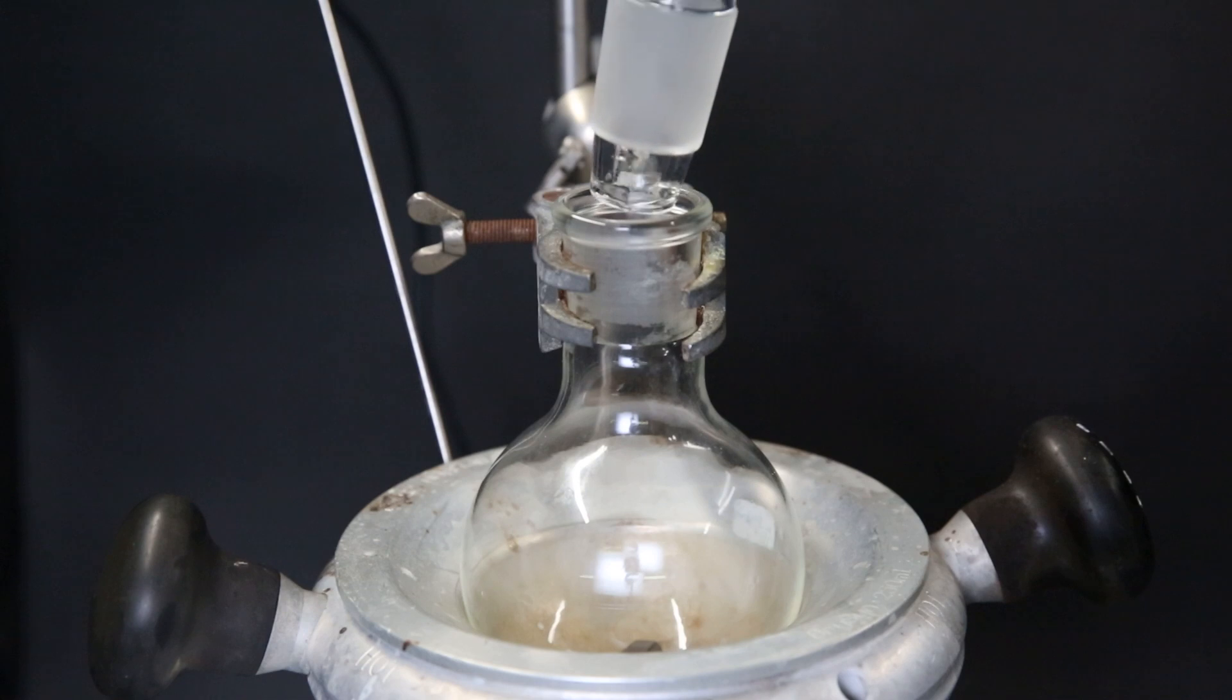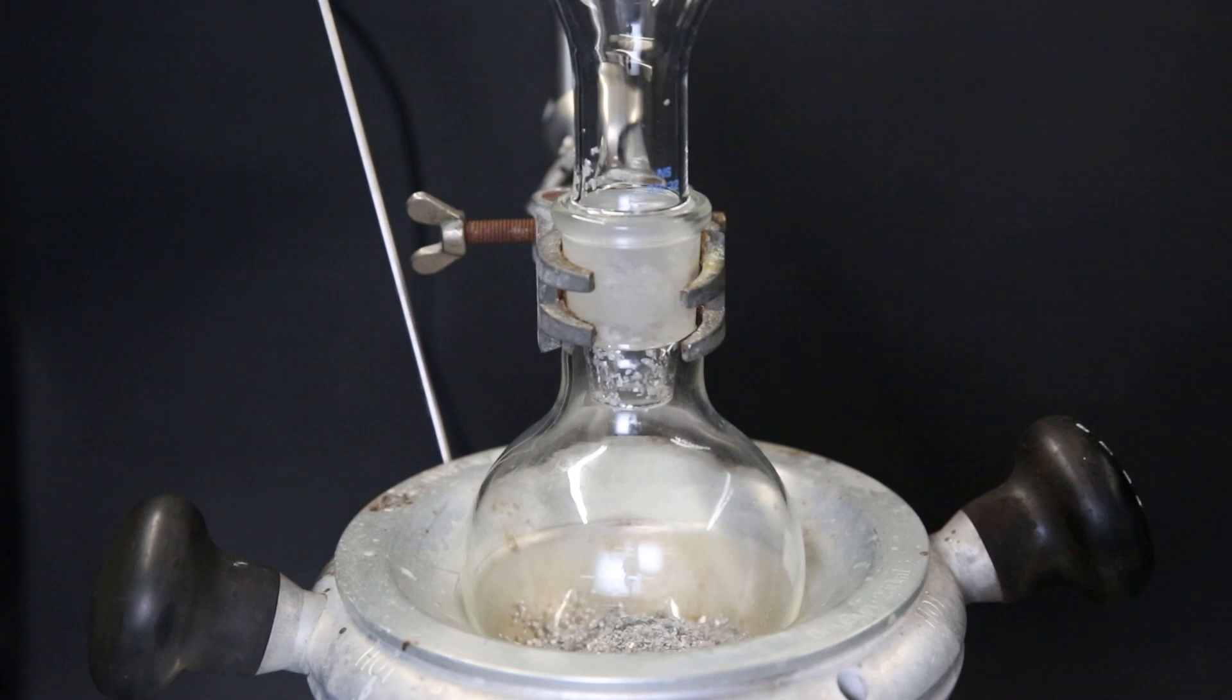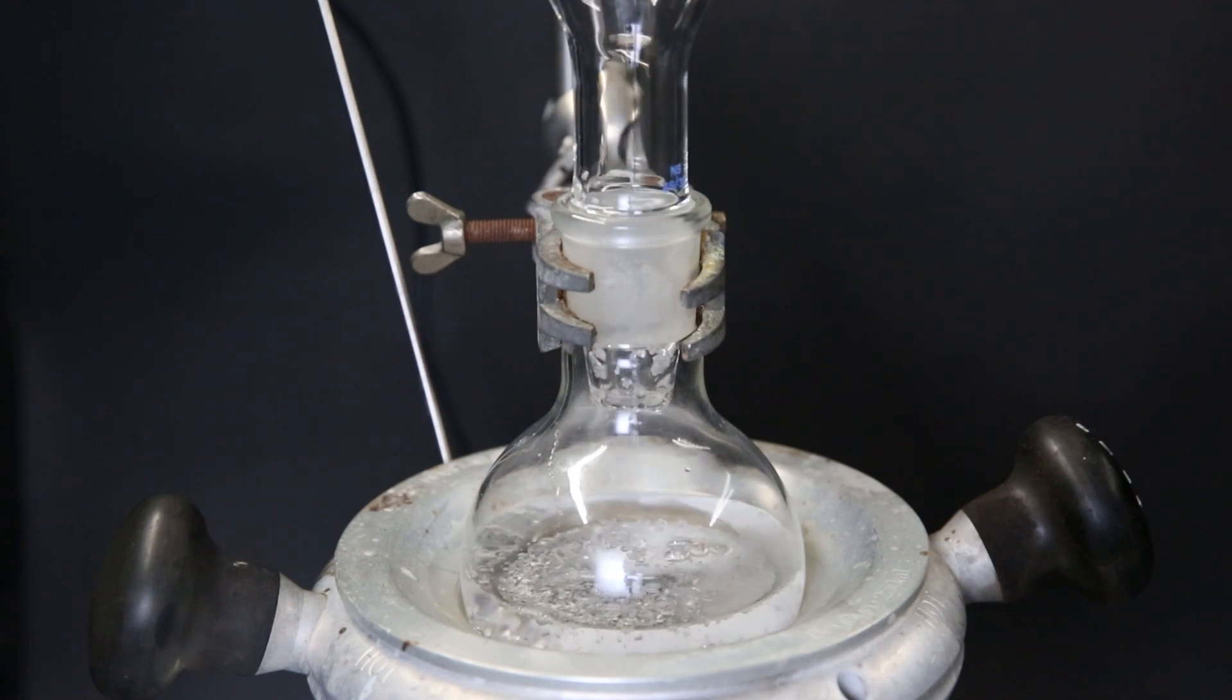To start off I set up a flask and add 14 grams of magnesium turnings, then 20 grams of sodium hydroxide on top. As the catalyst for this reaction I add 3 grams of menthol crystals and 150 mils of paraffin oil.